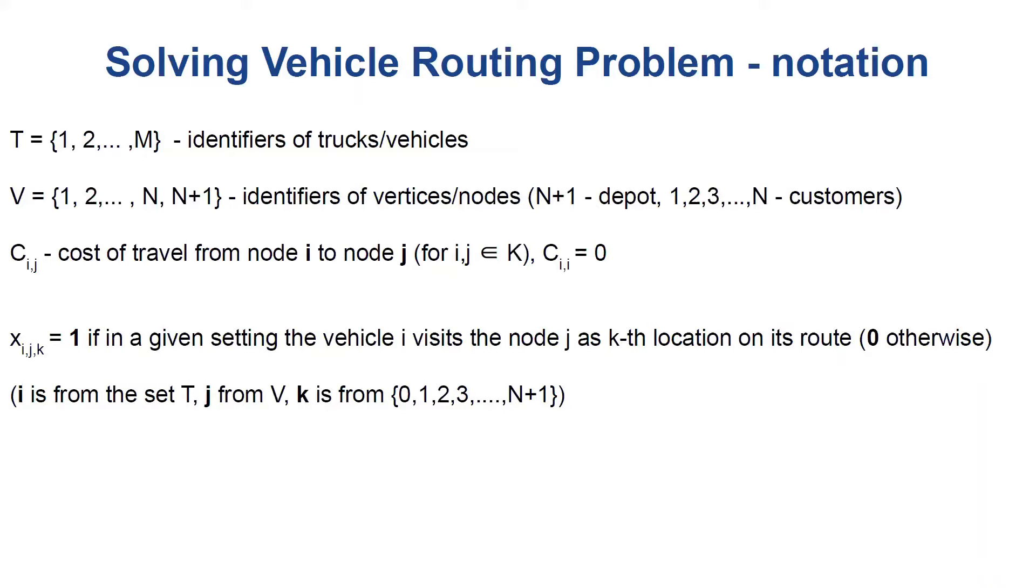Cij is a cost of travel from node i to node j. Obviously, Cii is equal to 0. A variable Xijk is equal to 1 if, in a given setting, the vehicle i visits the node j as kth location on its route. Otherwise, this variable is equal to 0.